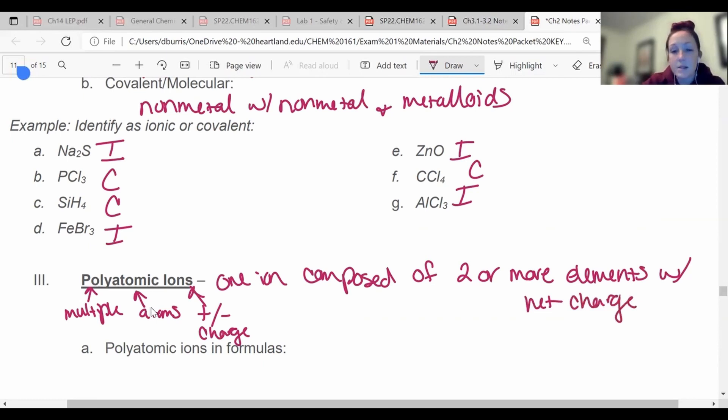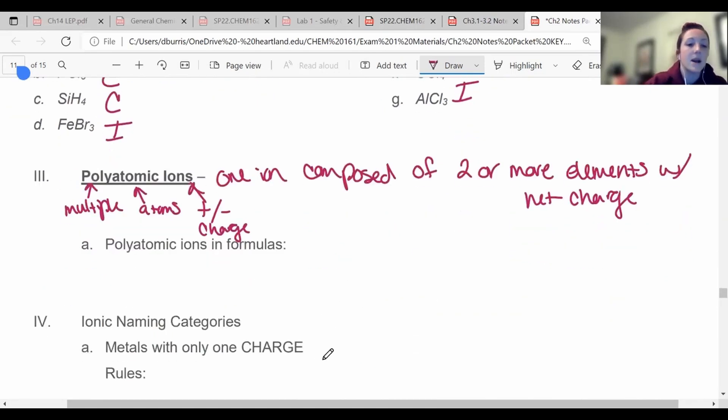Now you don't have to memorize the polyatomic ions. Some of them have weird names. They are on the list that I have linked on canvas, so I would print that page for sure, that and the periodic table, so that you have that handy when you're trying to name things. I know them off the top of my head because I use them all the time. You are probably going to know a lot of them off the top of your head by the end of this class also, but I would print that for now. It's going to be super helpful.